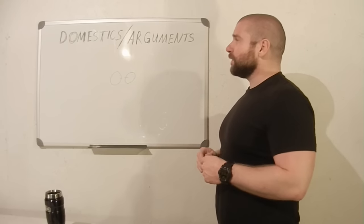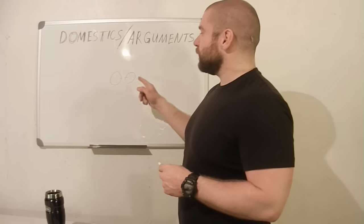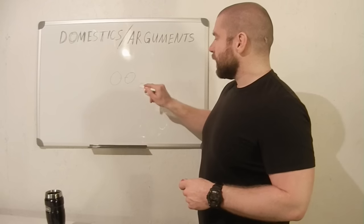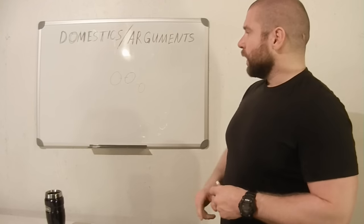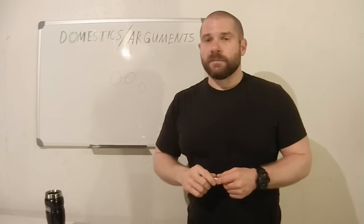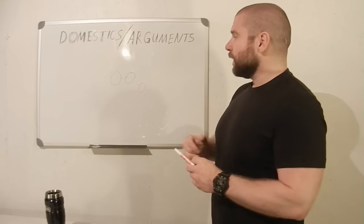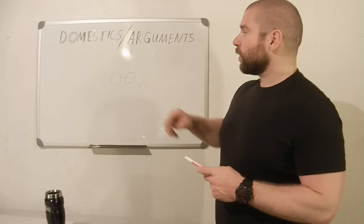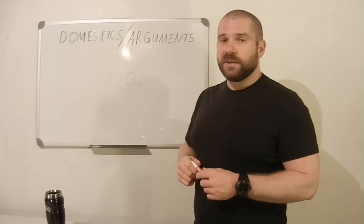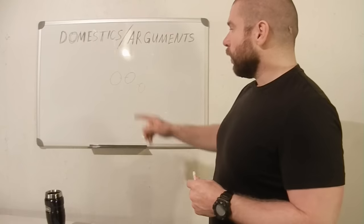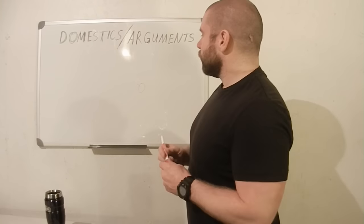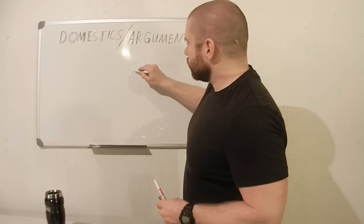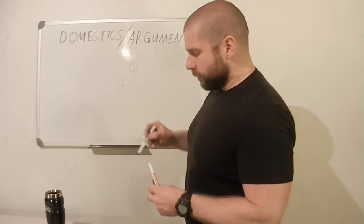So we show up onto the scene of a domestic or an argument, and we're trying to get these two people separated from each other. Very often it's a lot easier to stand back over this way and try to get one of these people to come to us. If we start talking from the side to these two people, oftentimes these two people will then realign so that they can both try to tell us their side of the story.